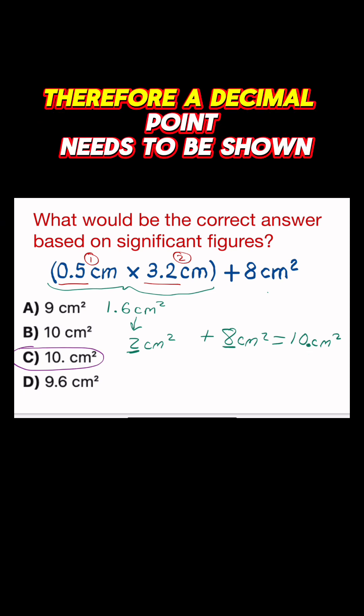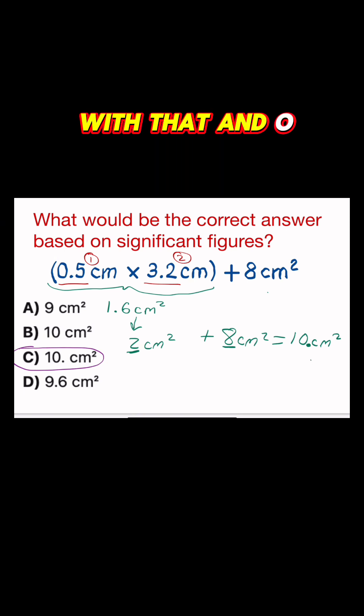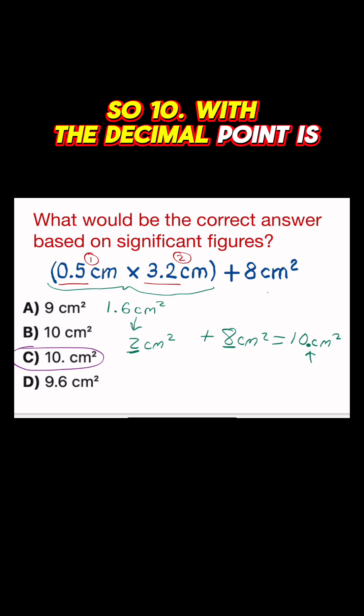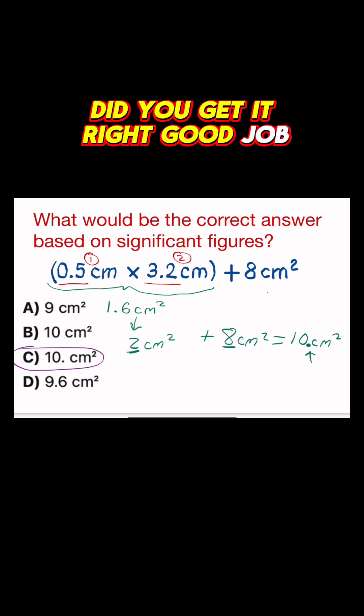Therefore, a decimal point needs to be shown with that 10, indicating that your answer is to the 1's place value. So 10 with a decimal point, centimeters squared is the correct answer. Did you get it right? Good job.